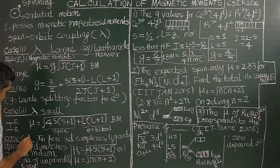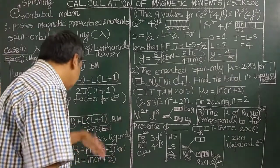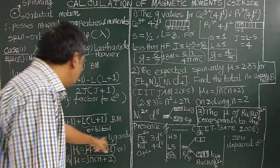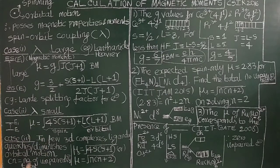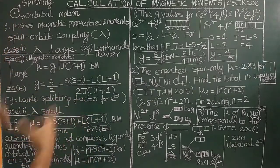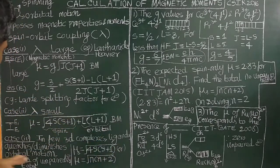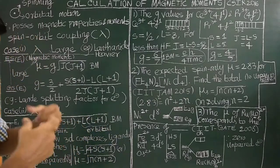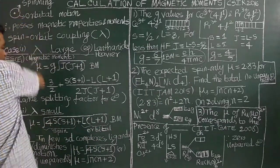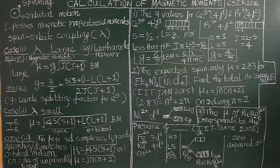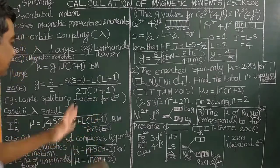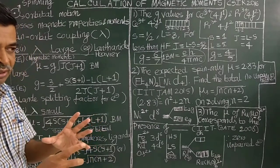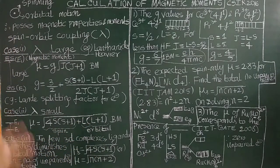In case three, for certain 3D transition metal complexes, ligands overlap with the metal d-orbitals and bind the d-orbital electrons. Therefore, the d-orbital electrons' motion is quenched or diminished by the ligands because they bind the d-orbital electrons — so the electron cannot revolve. Ligands quench the orbital motion, making the orbital contribution negligible.